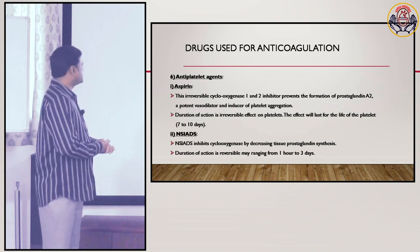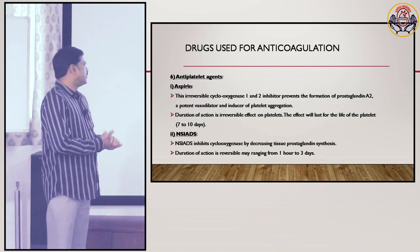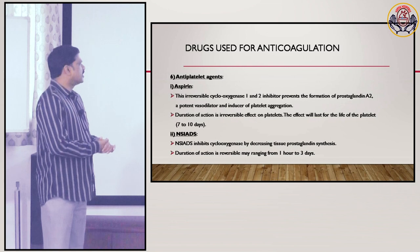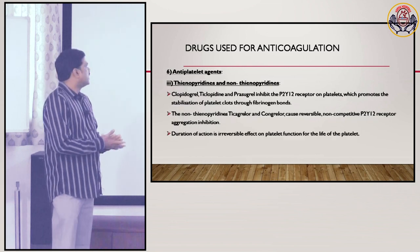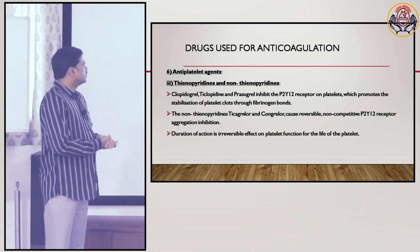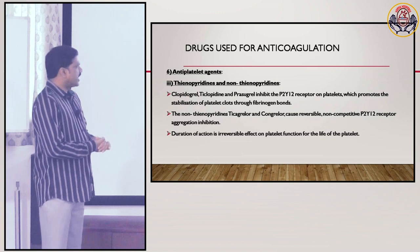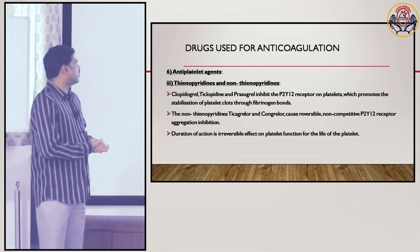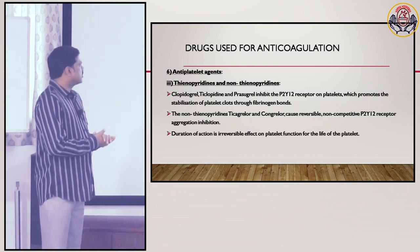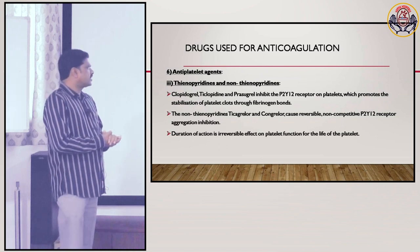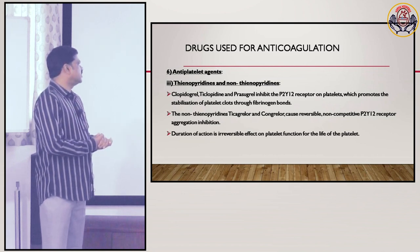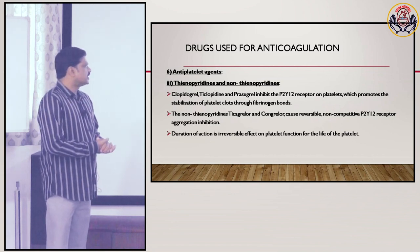NSAIDs inhibit cyclooxygenase by decreasing tissue prostaglandin synthesis; duration of action is reversible, ranging from 1 hour to 3 days. Thienopyridines and non-thienopyridines: clopidogrel, ticlopidine, and prasugrel inhibit the P2Y12 receptor on platelets, which promotes stabilization of platelet clots through fibrinogen bonds. The non-thienopyridines ticagrelor and cangrelor cause reversible non-competitive P2Y12 receptor aggregation inhibition.